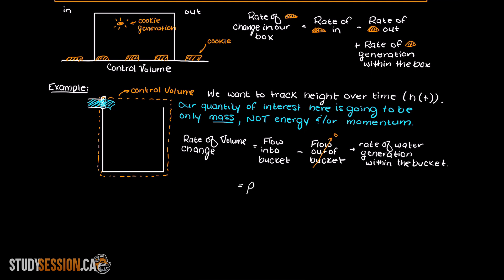The mass into our system will be the density, which is kilograms per meter cubed, times the volumetric flow rate into the system, meters cubed per second. Together these give the units of kilograms per second. We also know that we will have no generation or consumption term here as there is no water being generated or consumed in our control volume.